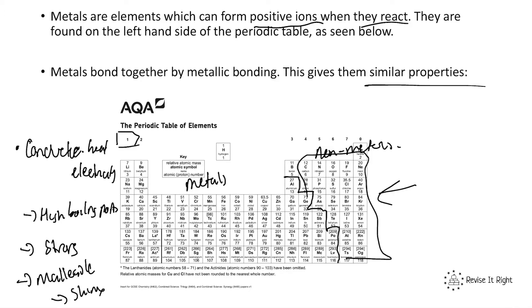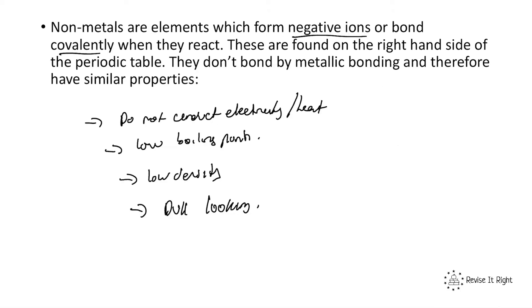Metals tend to be more shiny in appearance. To summarize: metals conduct heat and electricity, have high boiling points, are strong, malleable, and shiny. Non-metals do not conduct electricity or heat, have low boiling points, low density, and are dull looking.